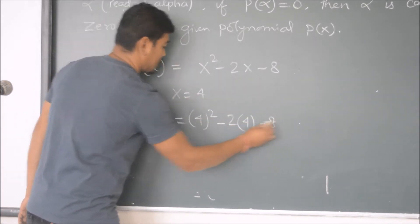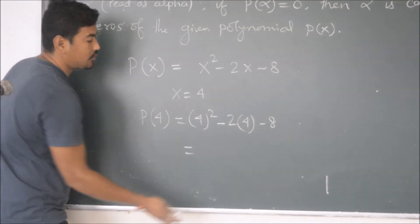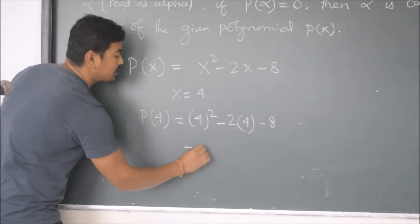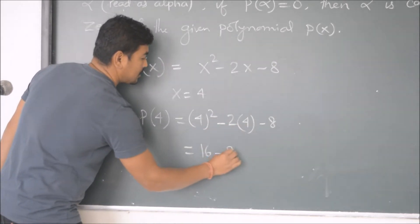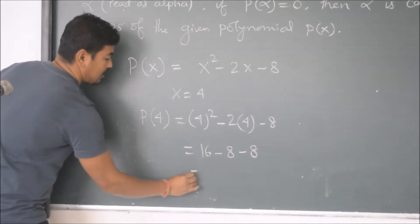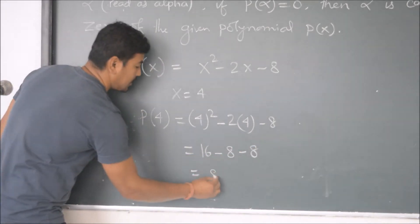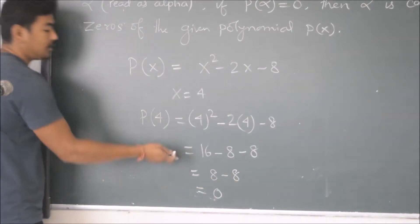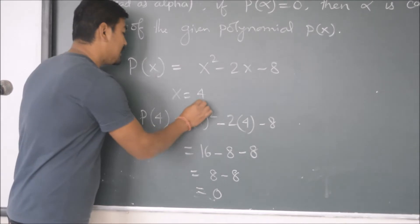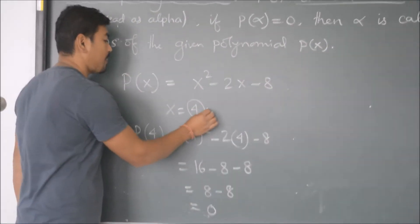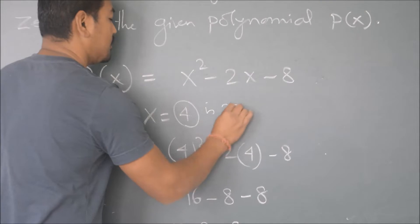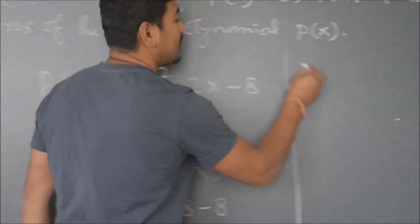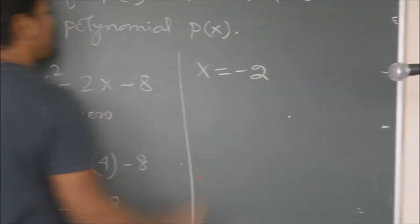Let us simplify p(4): 4 squared minus 2 times 4 minus 8 equals 16 minus 8 minus 8, which gives 16 minus 16 equals 0. We definitely get 0, so x equals 4 is a zero of this given polynomial.